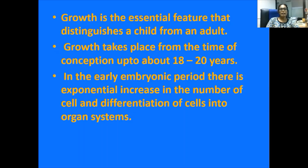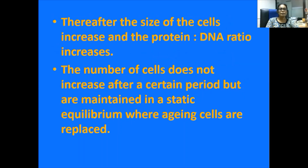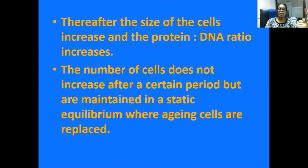In the early embryonic period there is exponential increase in the number of cells and differentiation of cells into organ systems — that is what you learn in embryology. Thereafter, the size of the cells increases rather than the number, and the protein to DNA ratio increases. That means the nucleic acid or chromosomes DNA amount doesn't change, but the protein and the size of the cell increases. After a certain period, the number of cells is static but the size and maturity changes, and after the static equilibrium, the aging cells are then replaced.